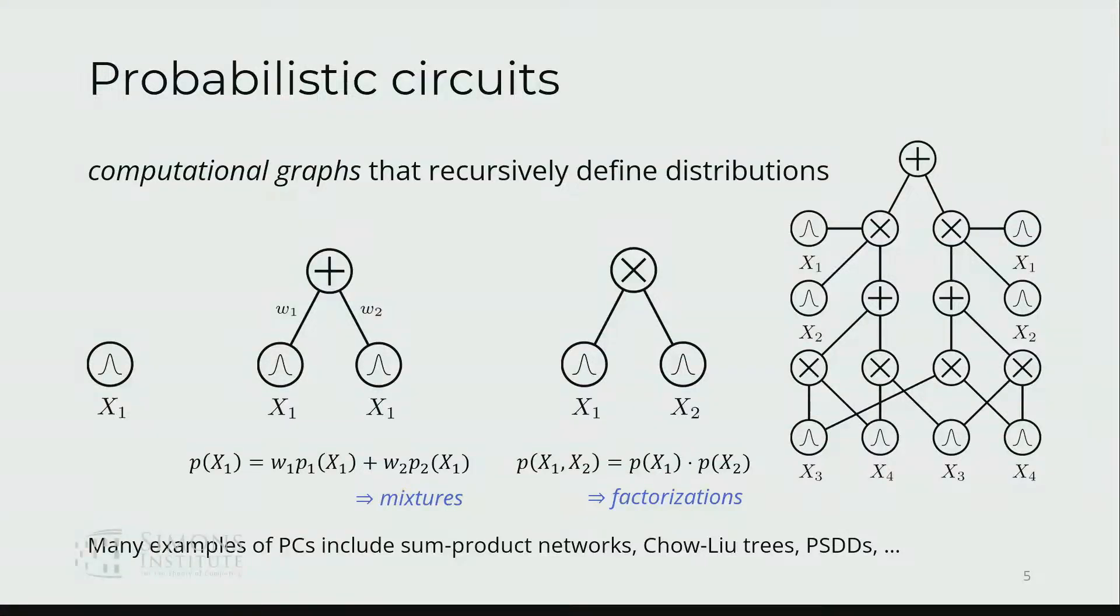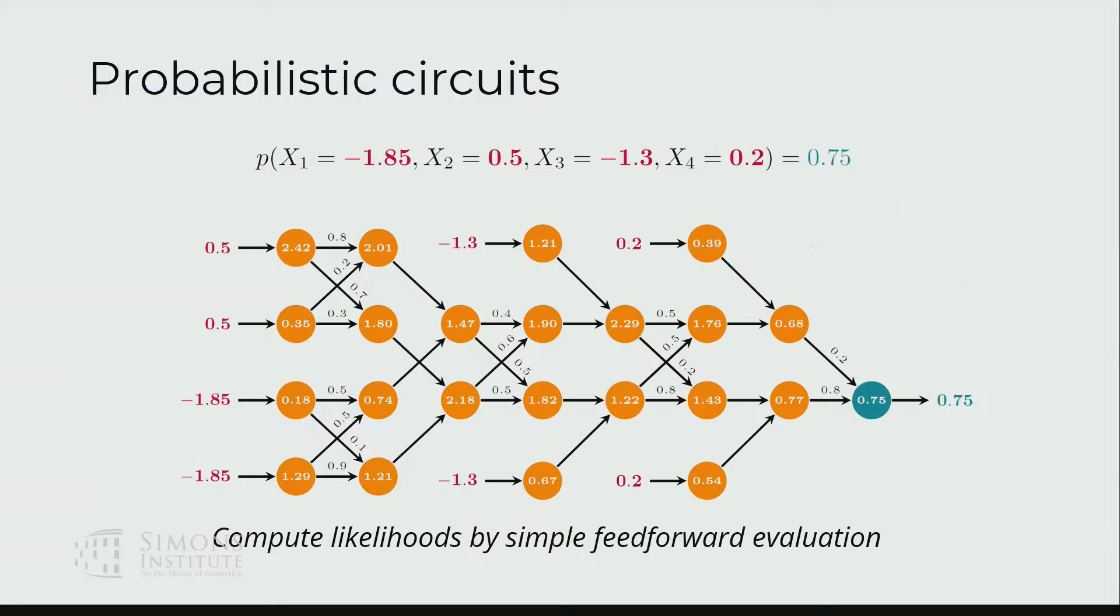The idea is that we combine these recursively to capture more and more complex distributions. When it comes to actually computing probabilities out of these models, it's very simple. I said it's a computational graph, so all you have to do is when you want to compute some probability given some values for your variable, you just plug those values in at the leaves and then just do the feed-forward evaluation following the semantics given by the computational graph. You're starting from the leaf, computing weighted sums and products until you get some value at the root node which gives you the probability.